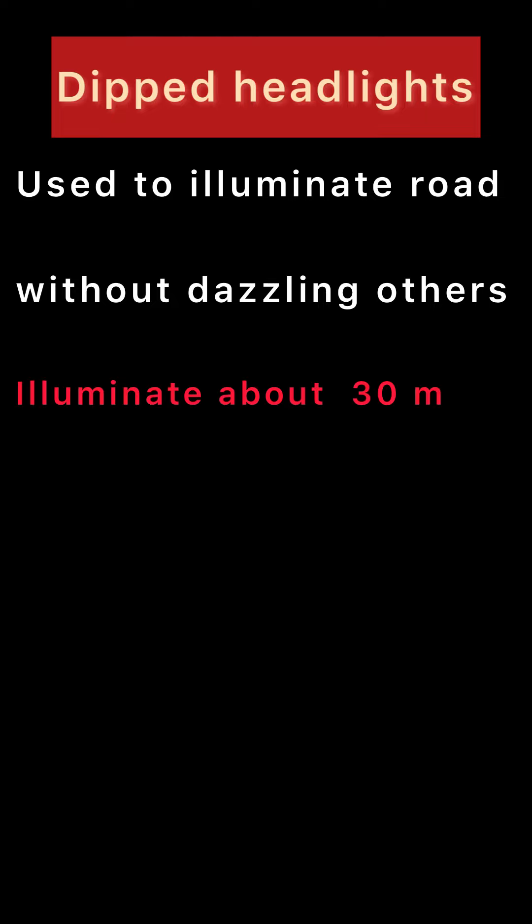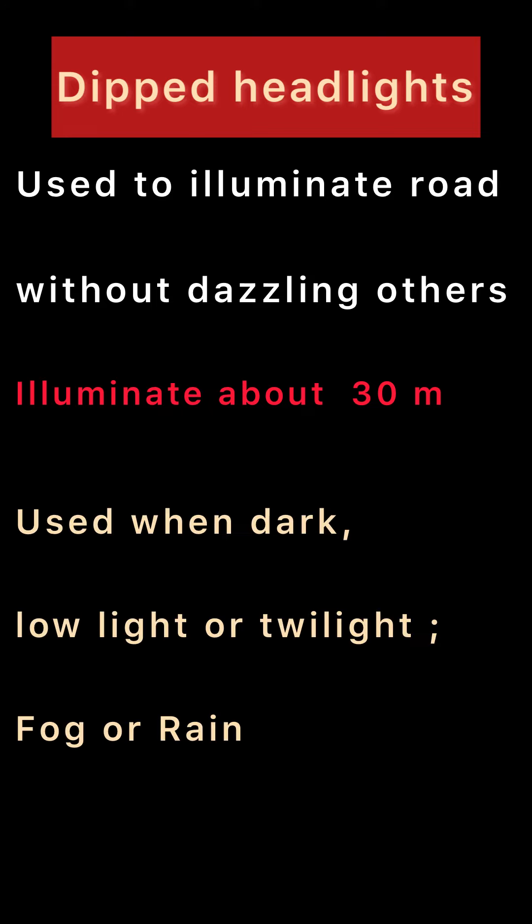Hi everyone, this is Lesson 5 Part B. In this video, let's cover exam-relevant content regarding dipped headlights and main beam. Dipped headlights are of course the most preferred way of driving, because they cause less harm to others and don't dazzle others. This is used to illuminate about 30 meters of the road, and used when visibility is reduced.